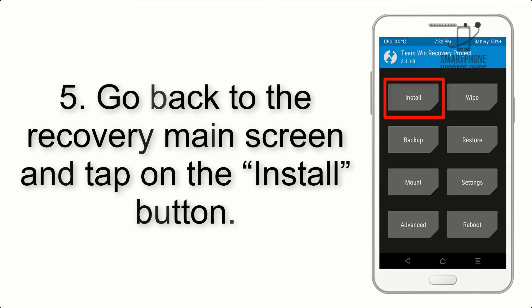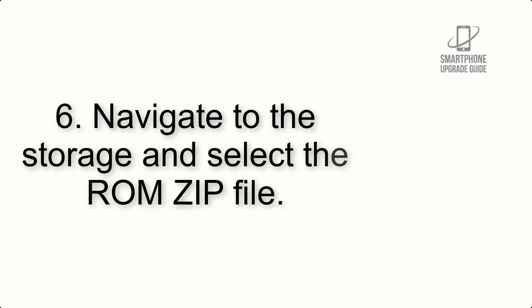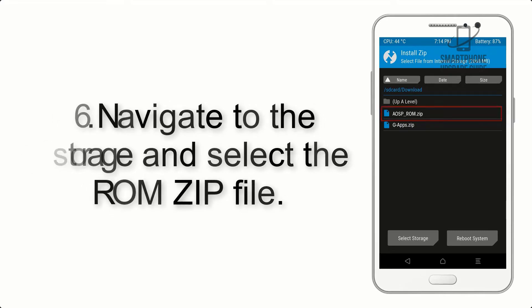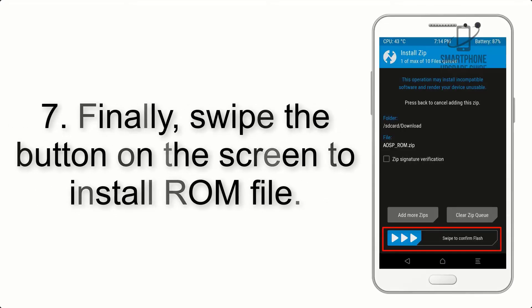Step 5: Go back to the recovery main screen and tap on the Install button. Step 6: Navigate to the storage and select the ROM zip file. Step 7: Finally, swipe the button on the screen to install the ROM file.